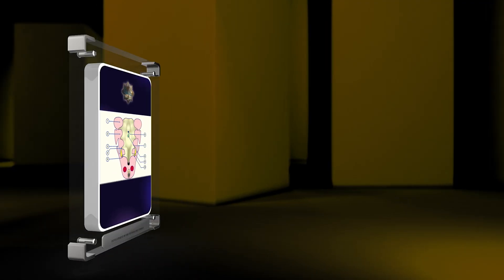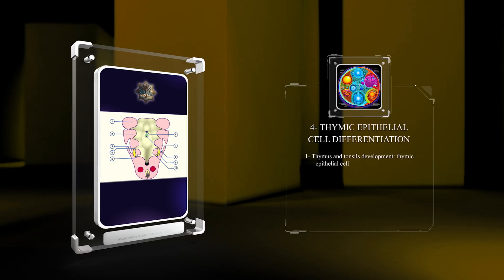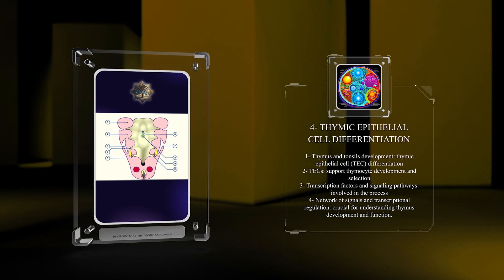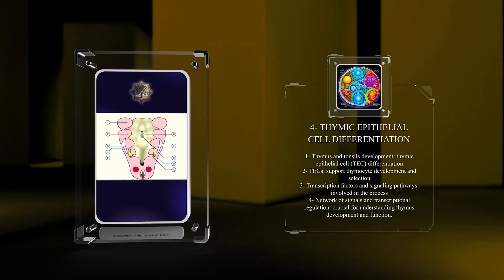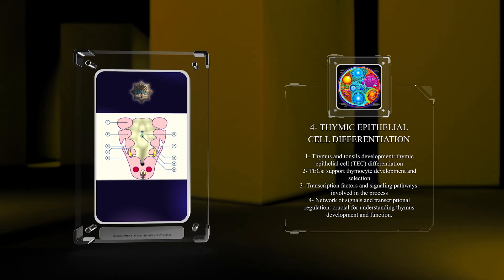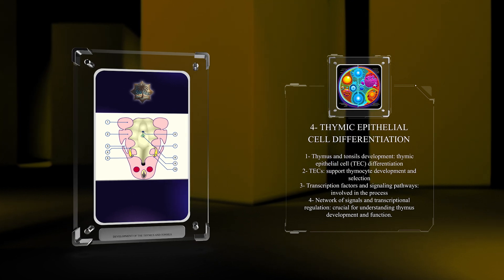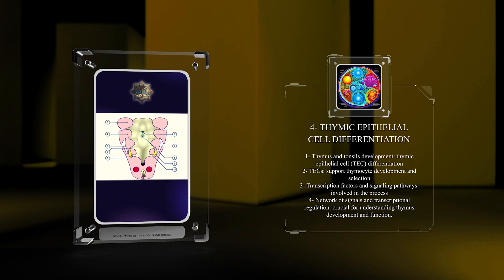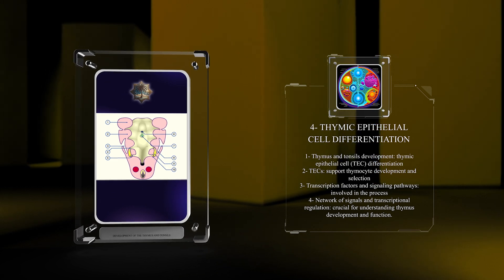In the development of the thymus and tonsils, the process of thymic epithelial cell (TEC) differentiation is vital. TECs are important for supporting thymocyte development and selection. Various transcription factors and signaling pathways are involved in this complex process. It is essential to understand the intricate network of signals and transcriptional regulation to grasp the development and function of the thymus.